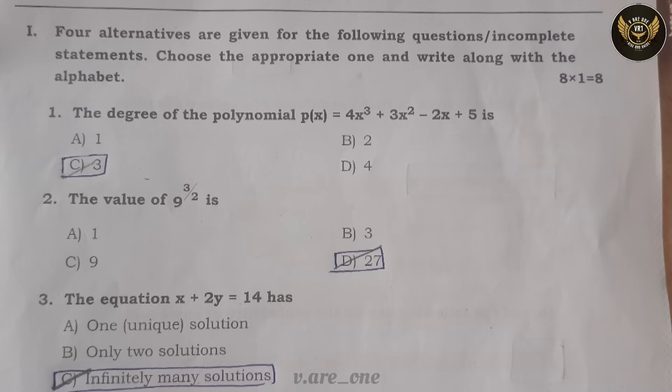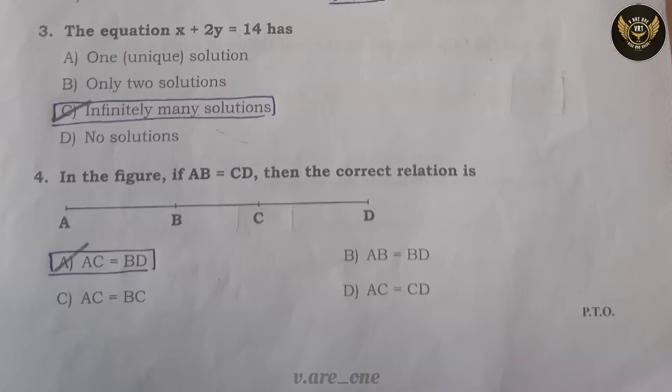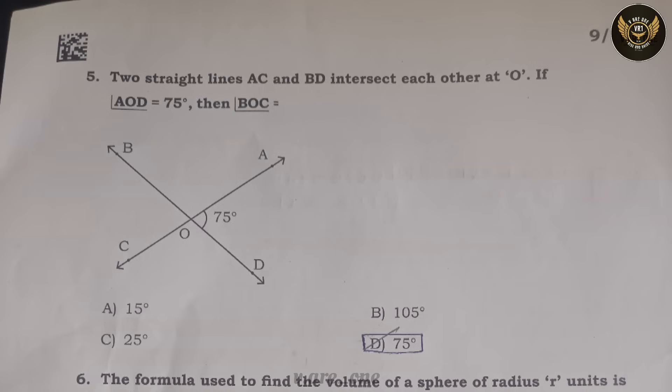Question 3: The equation x + 2y = 14 has option C: infinitely many solutions. Question 4: In the given figure, if AB equals CD, then the correct relation is option A: AC equals BD. Question 5: Two straight lines AC and BD intersect each other at O. If angle AOD equals 75°, then angle BOC equals option D: 75 degrees.